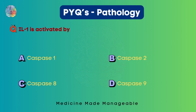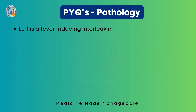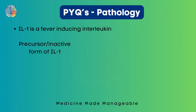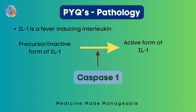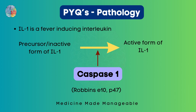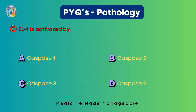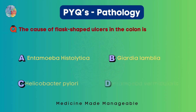Now next question: interleukin-1 is activated by caspase 1, 2, 8, or 9? Interleukin-1 is a fever-inducing interleukin. The precursor or inactive form of interleukin-1 is converted to the active form with the help of caspase 1. I've added a reference here if you want to read it in more detail. The correct answer is caspase 1.